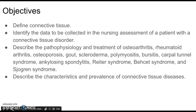We'll talk about the pathophysiology of many connective tissue disorders listed here: rheumatoid arthritis, osteoarthritis, osteoporosis, gout, scleroderma, polymyositis, bursitis, carpal tunnel syndrome, ankylosing spondylitis, Reiter syndrome, Paget syndrome, and Sjögren syndrome. We're also going to talk about characteristics and prevalence of various diseases.